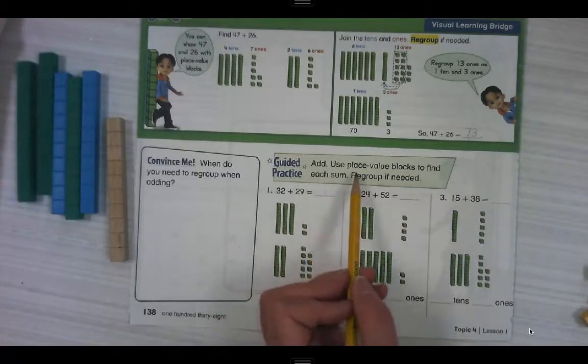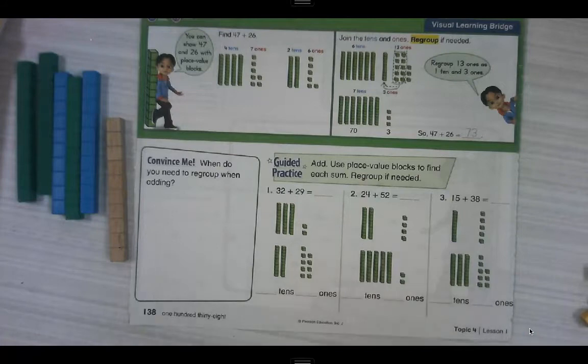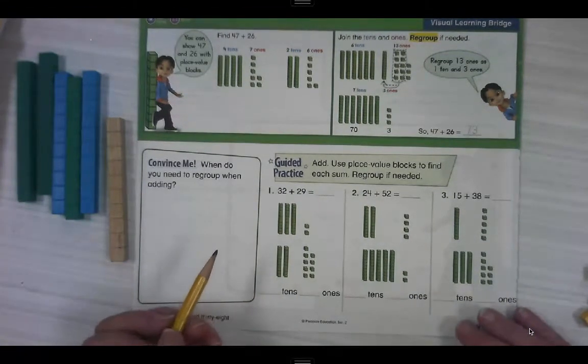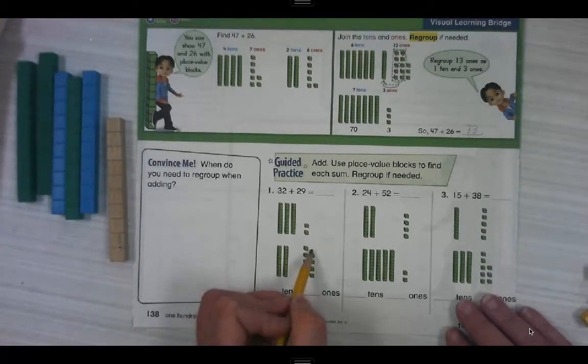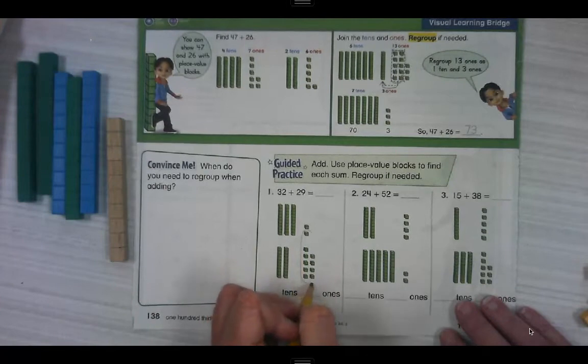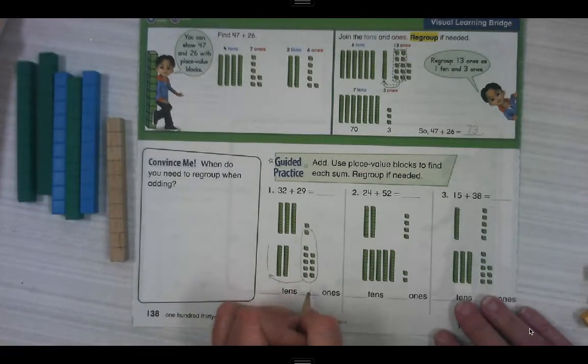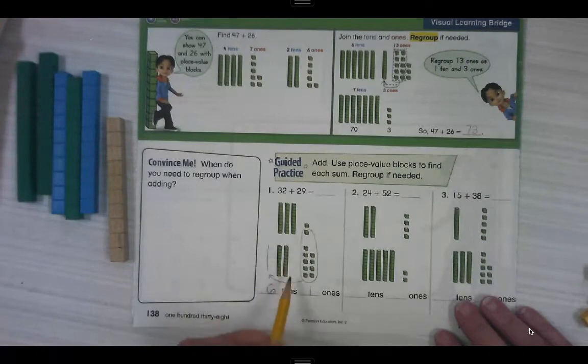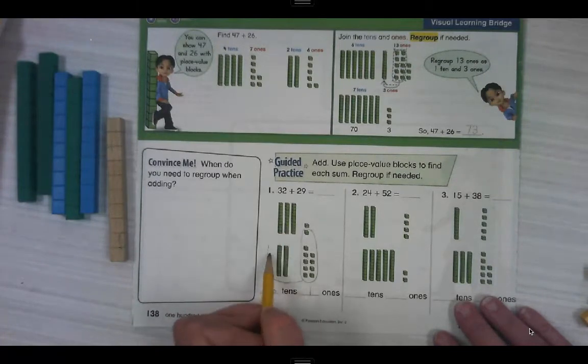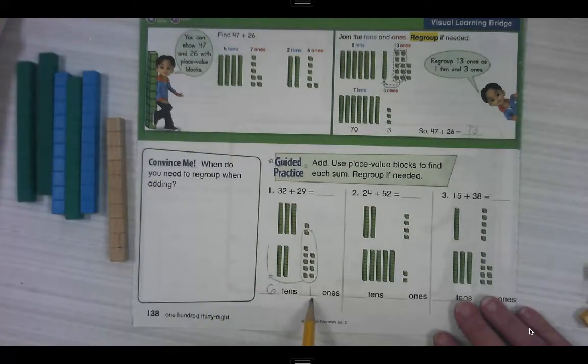For the guided practice, we're going to use place value blocks to find each sum. Regroup if we need to. Of course, we're going to regroup if we need to. 32 plus 29. Let's start with our ones. I can see that this one only needs one more to make a 10. So I'm going to snag that one. I'm going to move it over here. And I see that I have one left in the ones place and I have one, two, three, four, five, six tens. If I'm counting like that, it's okay to say six because I'm saying six tens. Or I could say in the tens place, we've got 10, 20, 30, 40, 50, 60. The value of the tens place is 60, but six tens. So the number that has six tens and one one is 61.